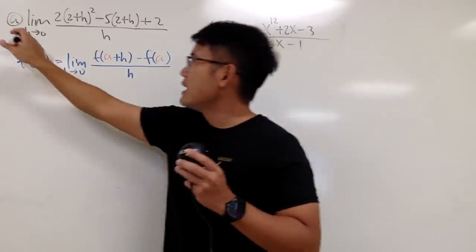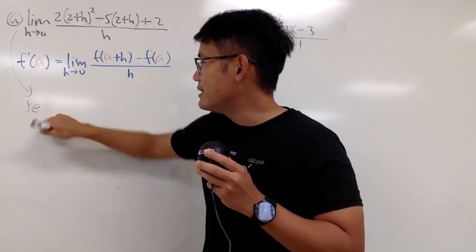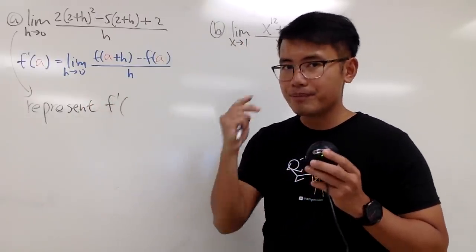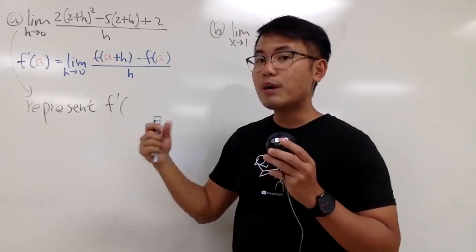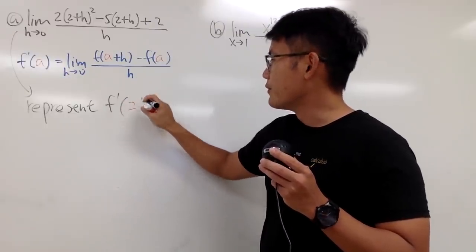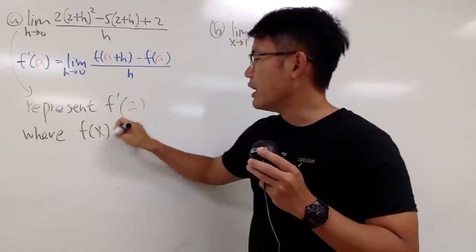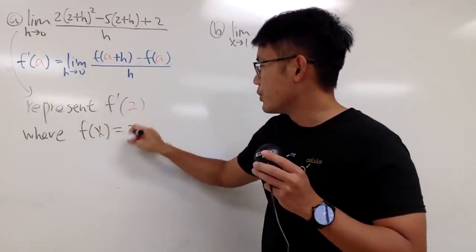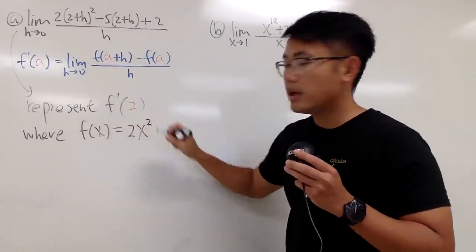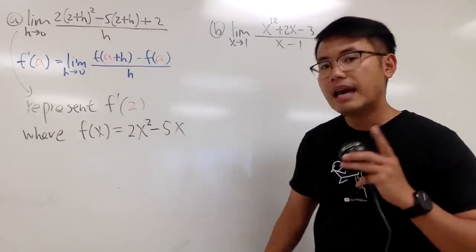So I will write this down for you guys. This limit actually represents f' of 2. Because you see, we have 2 plus h. That was the new input. And you do the a plus h. So a is 2. So this is f' of 2. And of course, we have to state the function, where the function is, well, as I said, 2, and this is the input, which is x. And then we have that to the second power. And then, minus 5x.